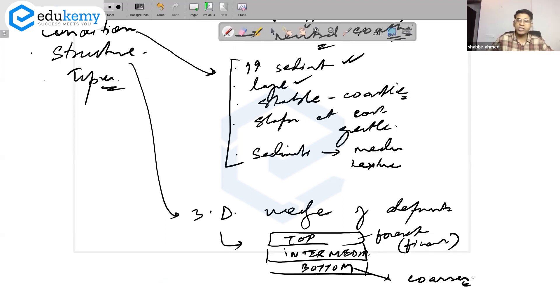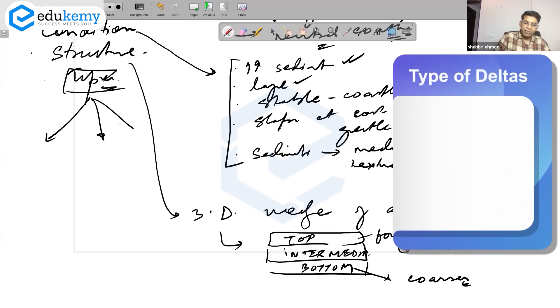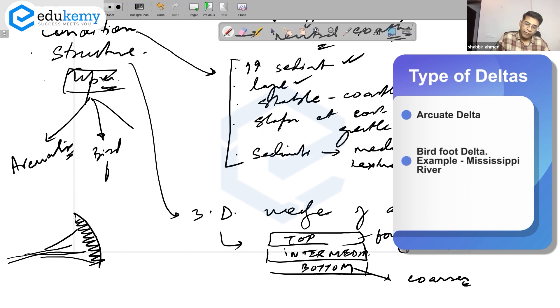Finally, the types of delta. The most common is arcuate delta. We have a river and the delta looks like an arc.